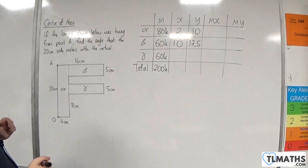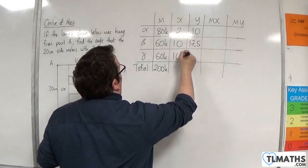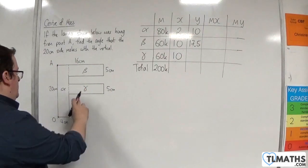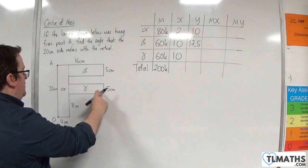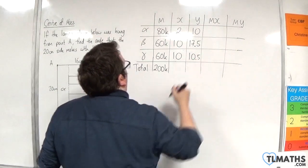Now, for gamma, it's going to have the same x-coordinate as beta. But the y-coordinate, we're going up 8 centimeters and then 2.5, so 10.5 for y.